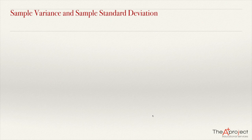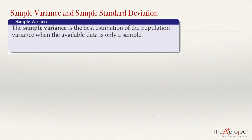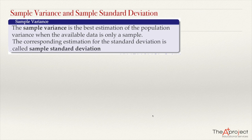In the present video, I will be explaining the variance and the sample standard deviation, which are two other measures of variation. The sample variance is the best estimation of the population variance when we have available only data from a sample. And obviously, the corresponding estimation for the standard deviation is the one called the sample standard deviation.